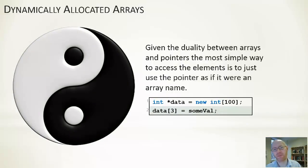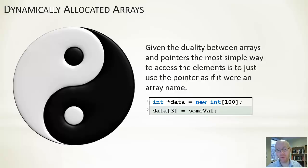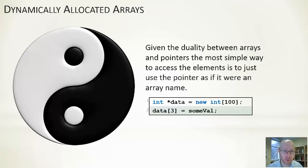Given the duality between arrays and pointers, the simplest way to access elements when dynamically creating an array is to treat the pointer as if it is an array. Under the surface, arrays are pointer manipulation — a pointer to the start offset by a certain amount. In C++, if you have an integer pointer, you can just treat it as an array and do data[3] for example. The usual rules apply: make sure you're not overshooting the bounds of the array.